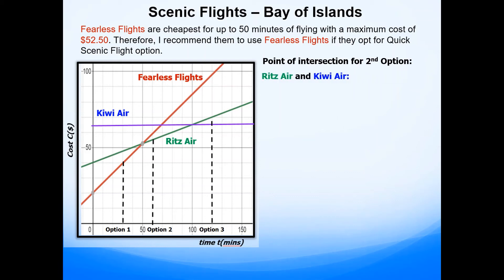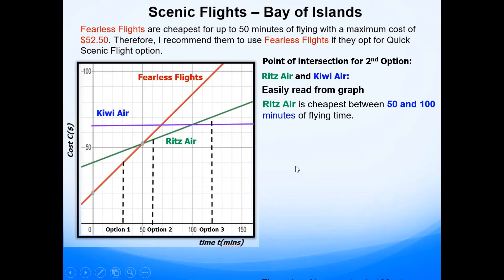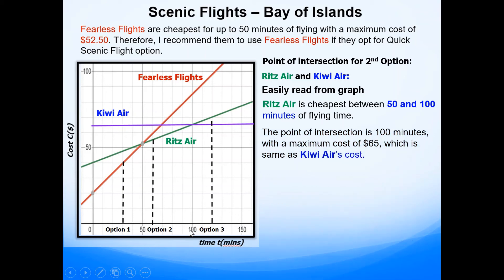For the second option, the point of intersection between Ritz Air and Kiwi Air is easily read from the graph. Ritz Air is cheapest for the second option and it's between 50 and 100 minutes of flying time. For 100 minutes the maximum cost is the same as Kiwi Air's price, and that is $65. So the point of intersection is 100 minutes with a maximum cost of $65.